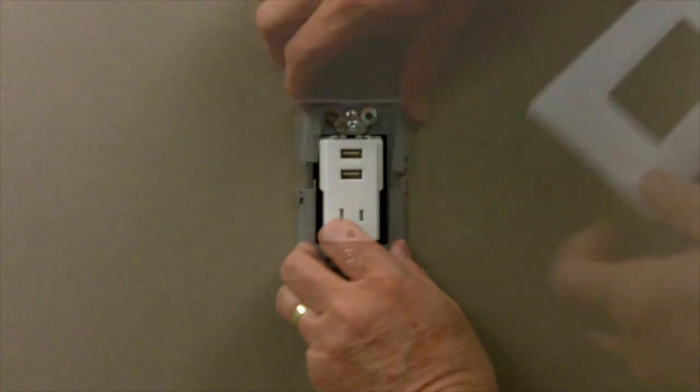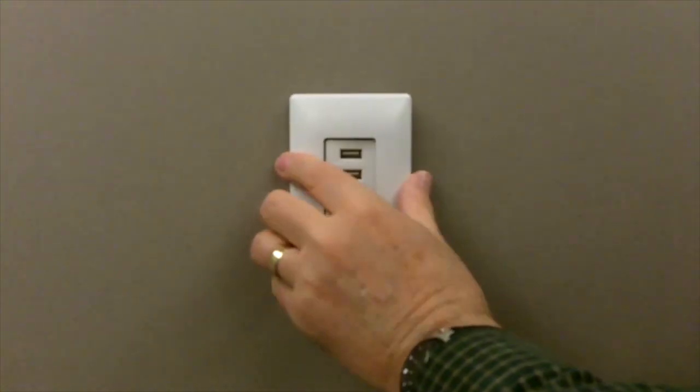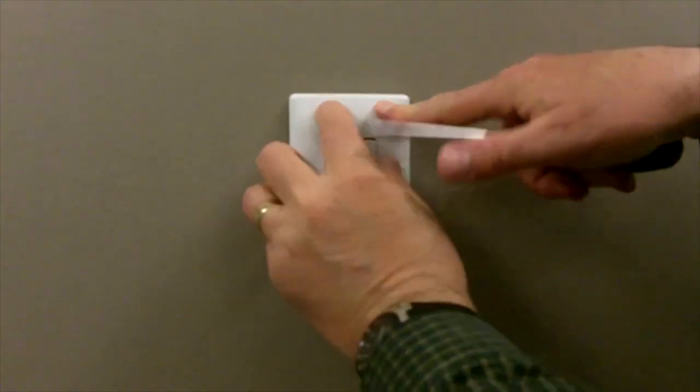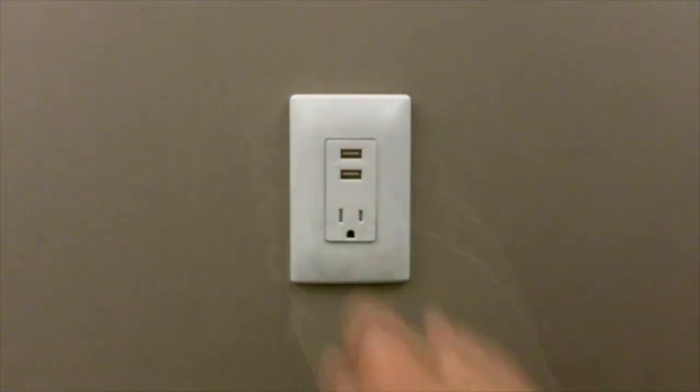Attach the wall plate. Restore electric power to the circuit by reinstalling the circuit fuse or turning the circuit breaker on.